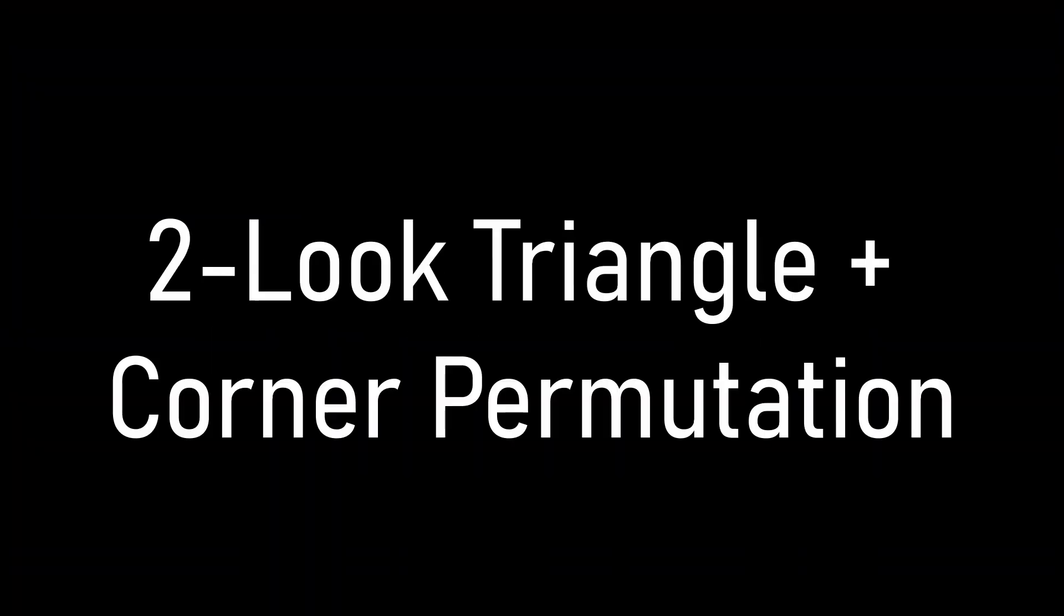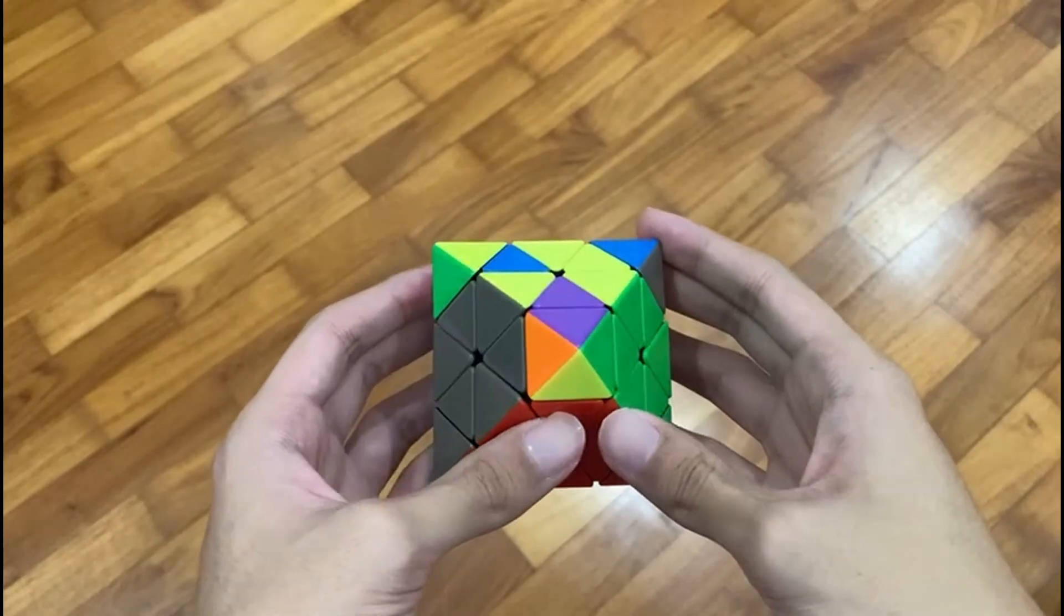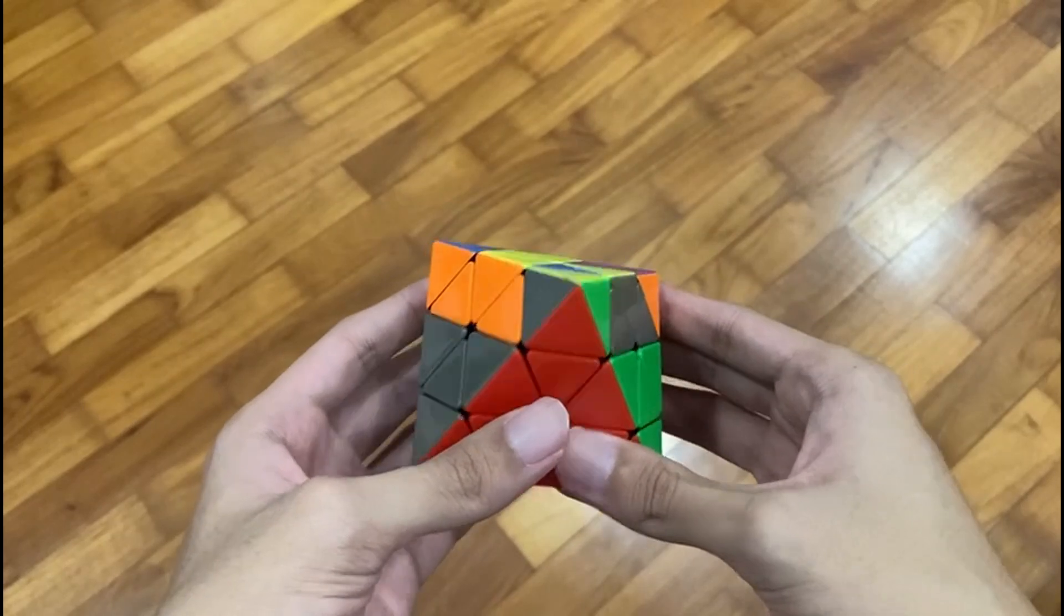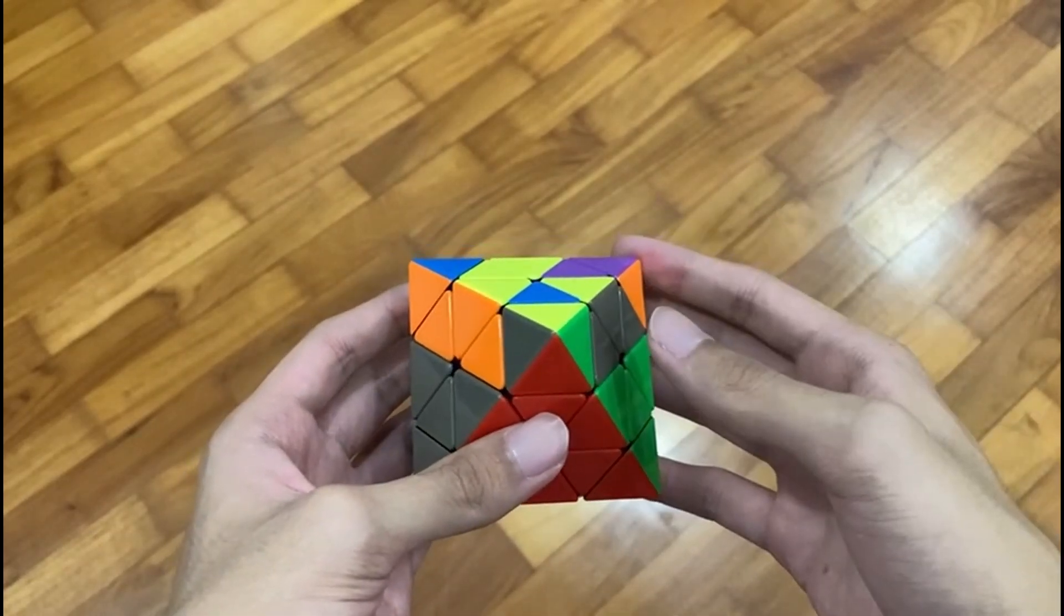This method is called two look TCP or two look triangle plus corner permutation. However, like most things in life, this method will involve more than two looks. So, in the beginner's method, if you've seen Ben Puzzle's tutorial,